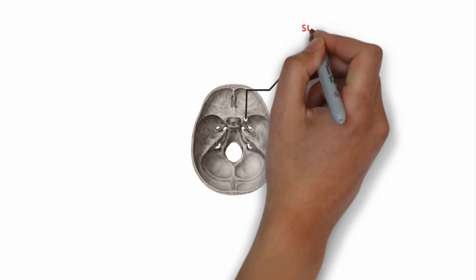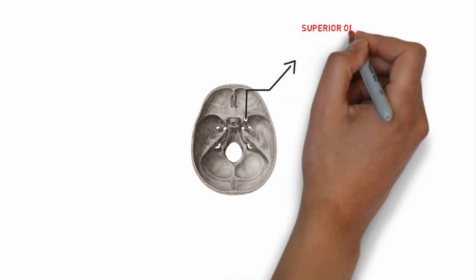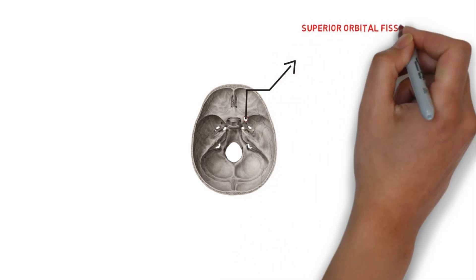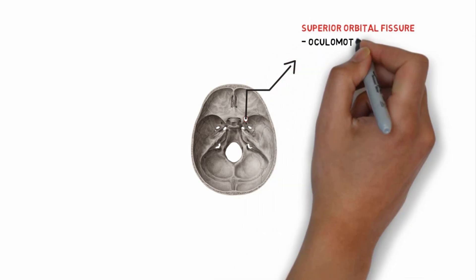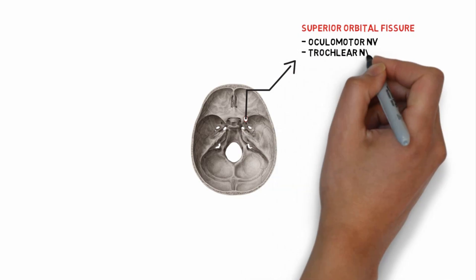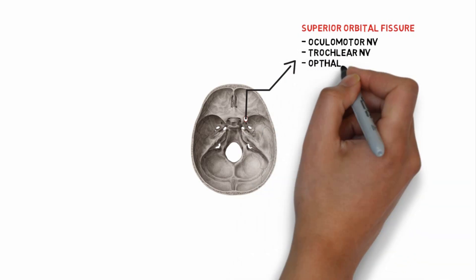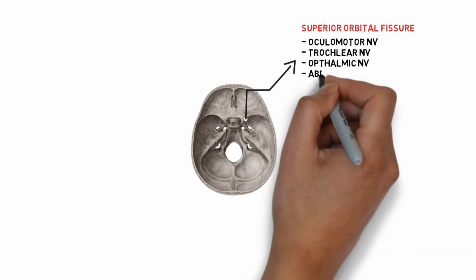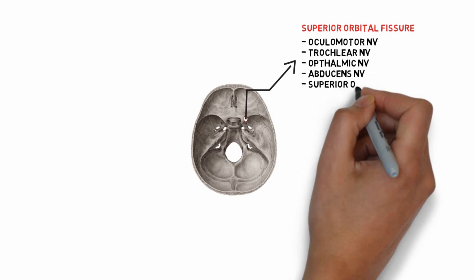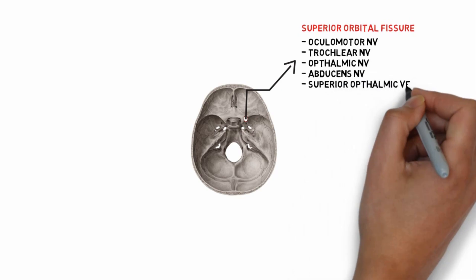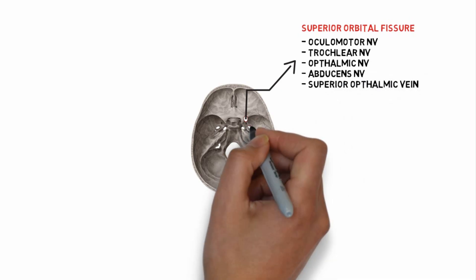The first one is the superior orbital fissure. Structures passing through it include the oculomotor nerve, trochlear nerve, ophthalmic nerve, abducens nerve, and the superior ophthalmic vein.